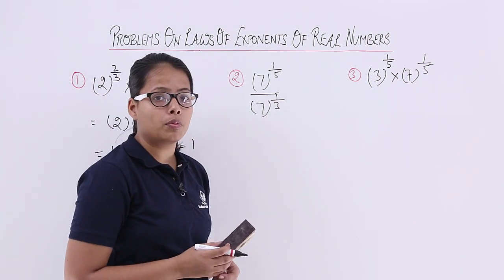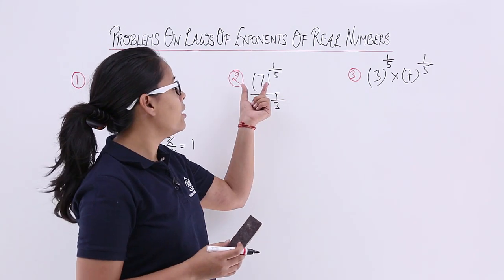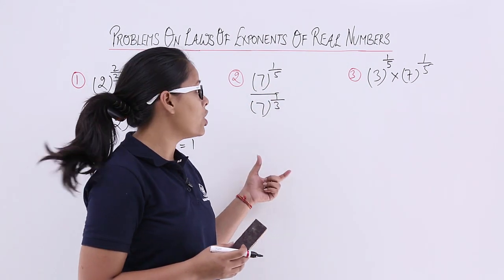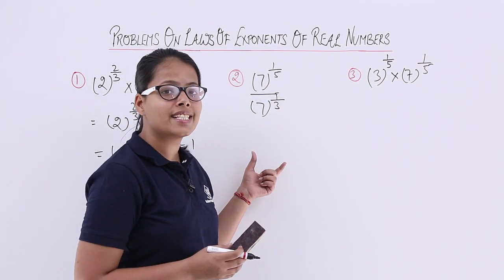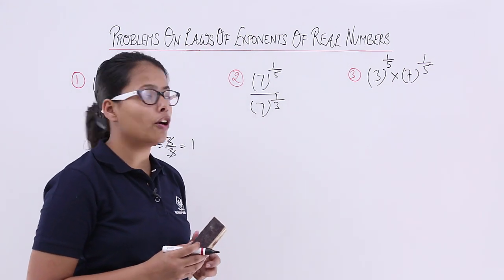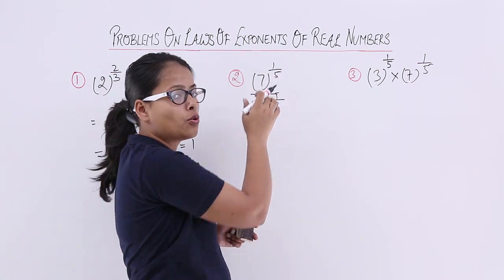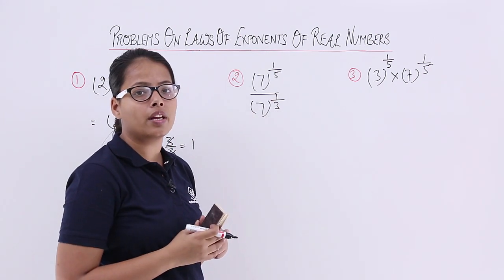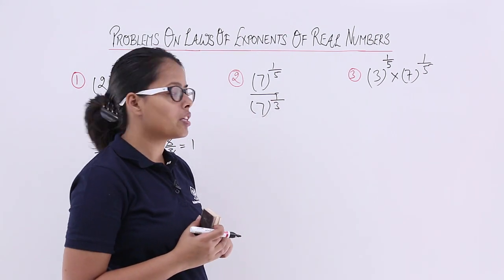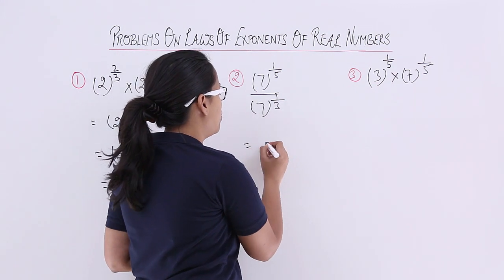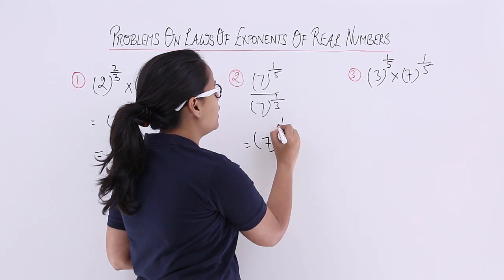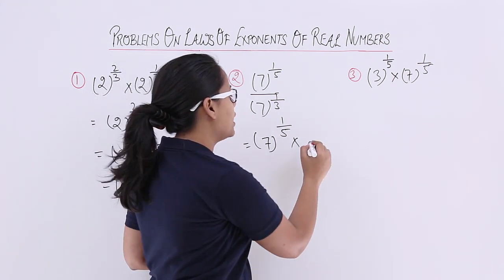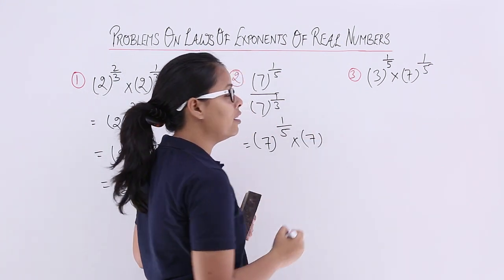Now for the second problem, you can see here that the base is in fraction form, which corresponds to the second law of exponents of real numbers: 7 raised to power 1 by 5 in the numerator and 7 raised to power 1 by 3 in the denominator. To solve this, you will bring the denominator value into the numerator.